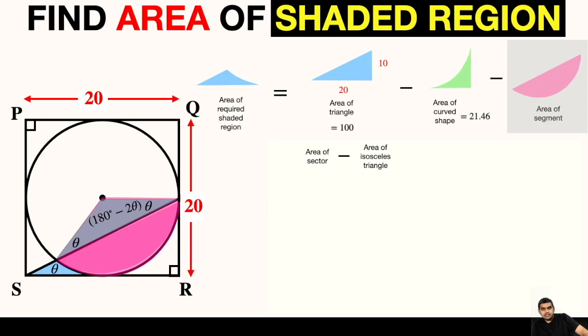Let us write the formula for area of sector. Area of sector is central angle divided by 360 degree times pi r square minus area of isosceles triangle. If we have any isosceles triangle, the formula is half times a times b times sine of included angle between the two sides. Here the two sides are the radius of the circle and hence a times b is replaced by r times r or r square and the included angle will be 180 minus 2 theta.